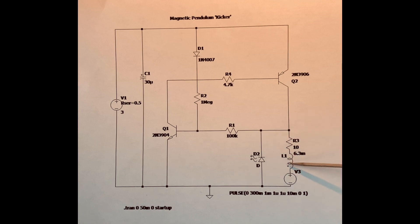The point is reached where the magnetic field in L1 collapses, and as that magnetic field collapses, it generates a back EMF which lights the LED diode.